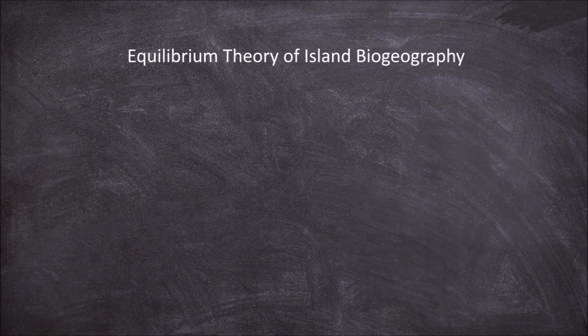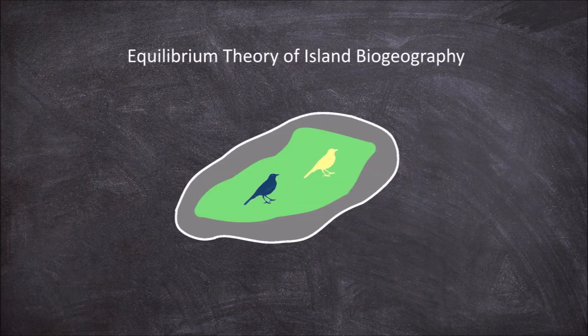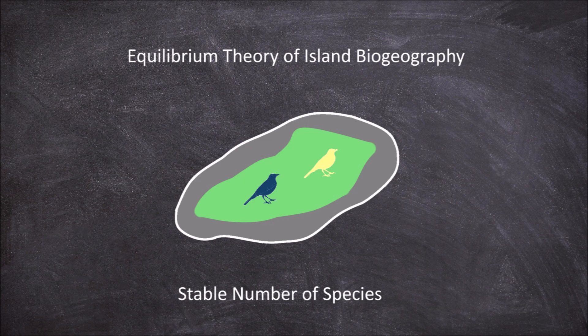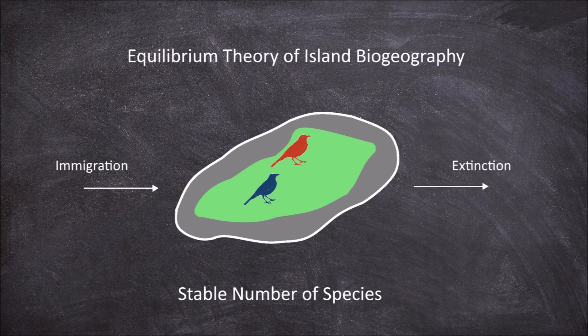The equilibrium theory of island biogeography refers to when these islands have reached a stable number of species. It relates to the idea that the number of species found on an island over time is a balance between immigration of species to the island and extinction of species, reaching an equilibrium. The level of this equilibrium is different on different islands.